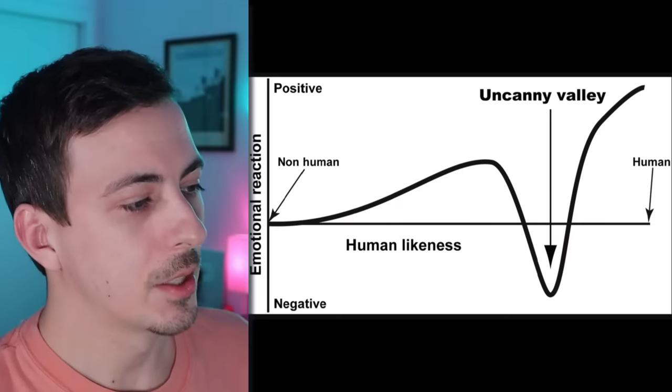Welcome back. Today we are talking about the Uncanny Valley. So what is the Uncanny Valley? The Uncanny Valley is a point on the spectrum of human likeness that something can have, where it's too close but not quite.